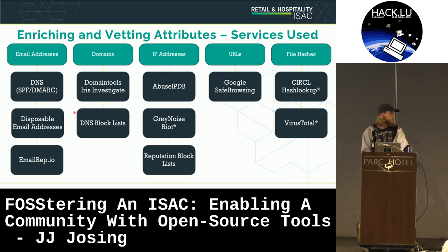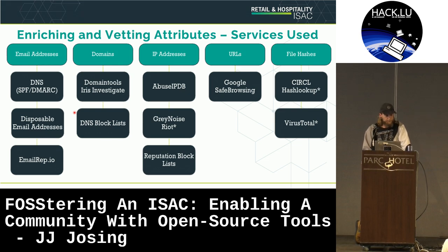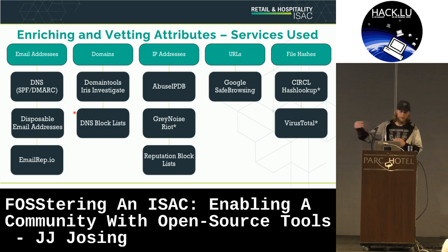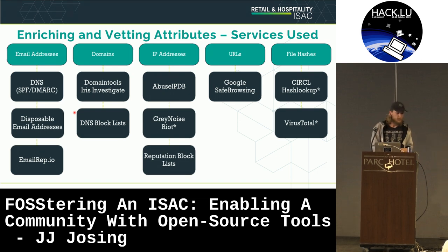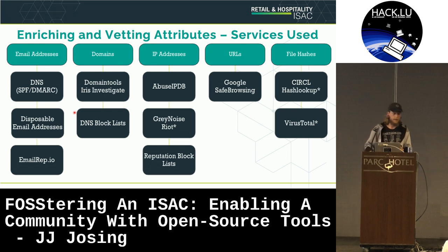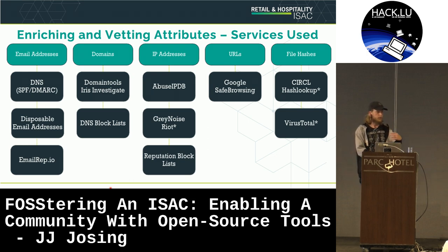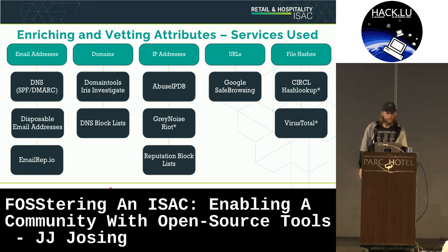These aren't all the services included in Pyote, but these are the ones we use for enrichment and vetting. Based on the attribute type, it determines which services are run. For emails: we check SPF and DMARC records, whether the domain is spoofable, whether it's a disposable email address using emailrep.io. For domains: we get domain risk scores and check reputation block lists. For IPs: we look at abuse confidence scores and reputation block lists.